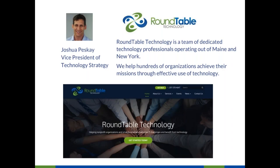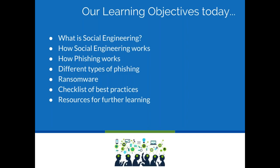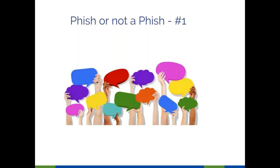I am Joshua Peskowitz, Vice President of Technology Strategy for Roundtable Technology. Roundtable Technology provides services to nonprofits and small businesses all around the country, but predominantly in New York City and in Maine. Our learning objectives today: what is social engineering and how it works, how phishing works, different types of phishing, ransomware, and a checklist of best practices to protect yourself and your organization.